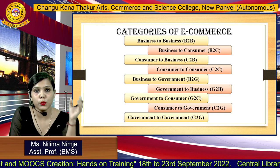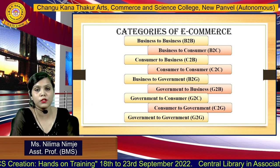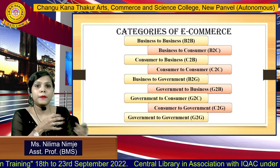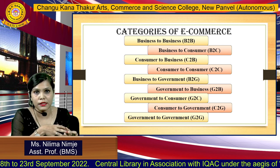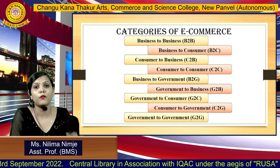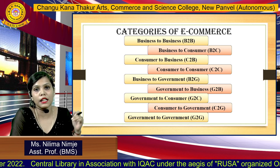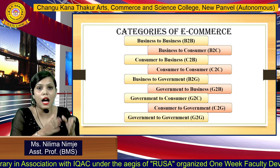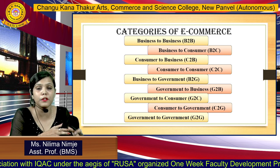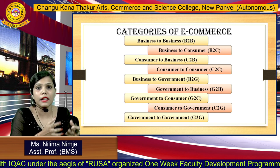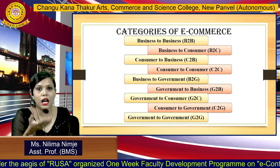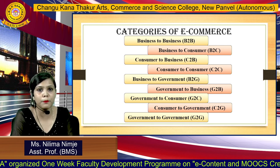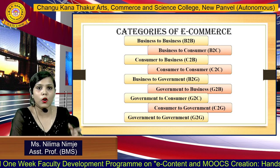Now moving towards the models of e-commerce. The very first is B2B, which is Business to Business. Here the transaction is carried out between businesses, usually done with the help of EDI — Electronic Data Interchange. Every individual business gets an opportunity to build high-value relationships with other businesses through their transactions. Examples of B2B are Trade India, Alibaba, and IndiaMart.